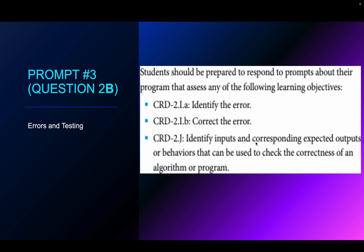You may also need to identify inputs and corresponding expected outputs or behaviors that can be used to check the correctness of an algorithm or program. Explain how you would test it to make sure it generates the desired results. You want to try the minimal value the algorithm can accept, the maximum value, and have different expected outcomes for each. If it's dealing with numbers, definitely try negative numbers, zero, and positive numbers, and try the values right at any switching points in your if-else statements.